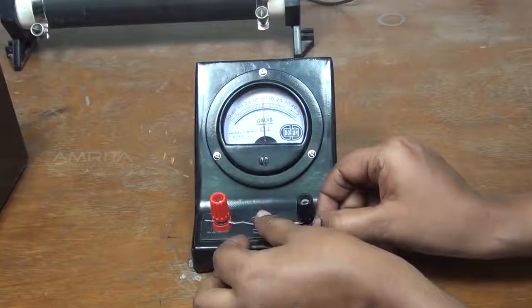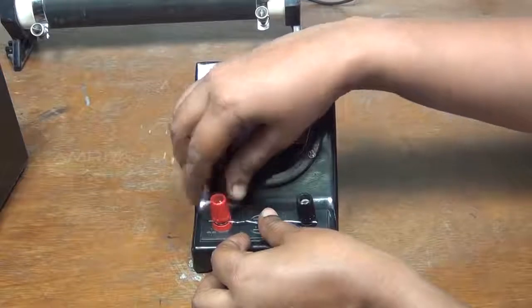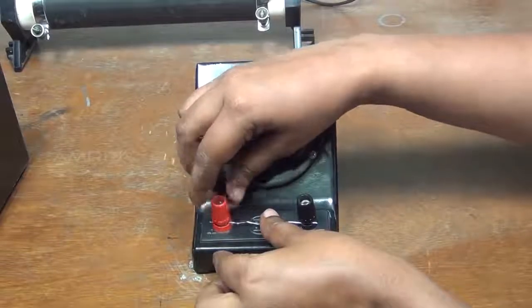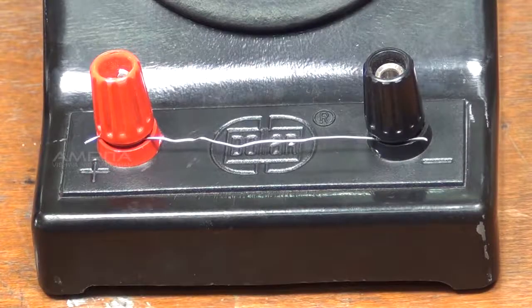A galvanometer can be converted into an ammeter for measuring larger current by connecting a low resistance called shunt resistance in parallel to the galvanometer.